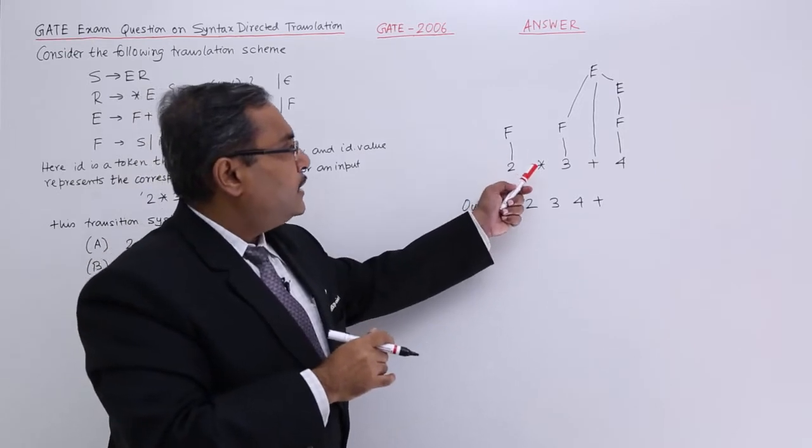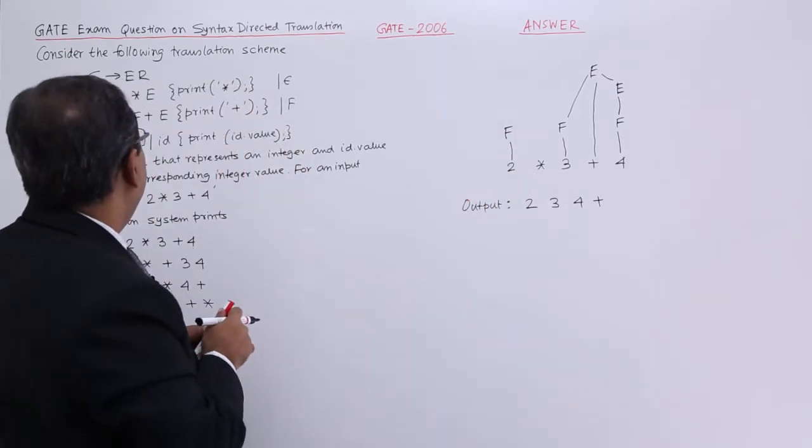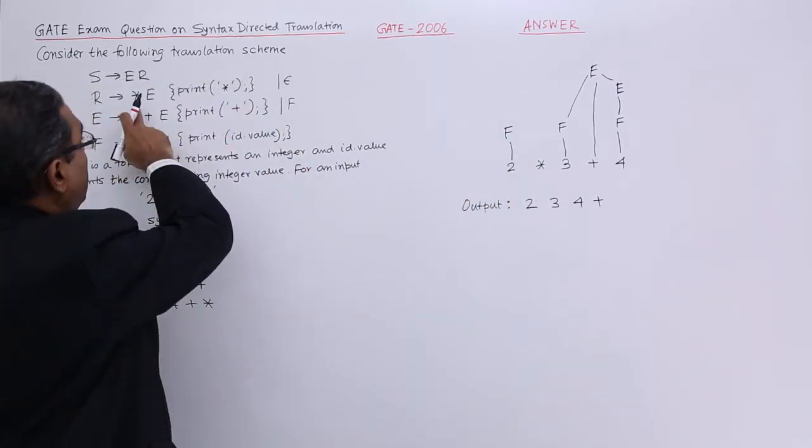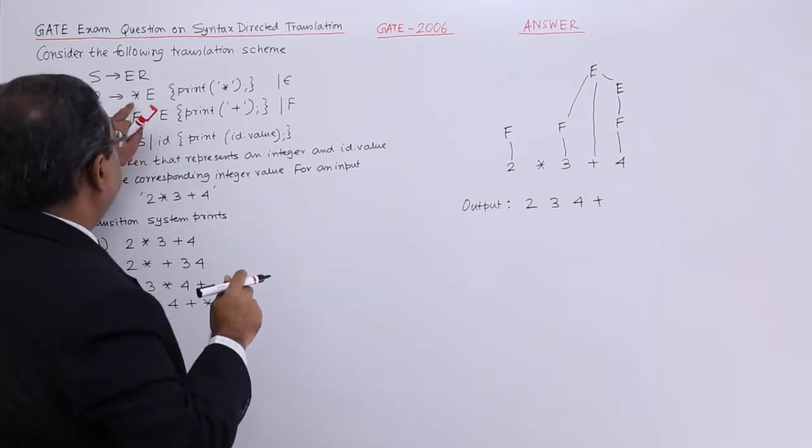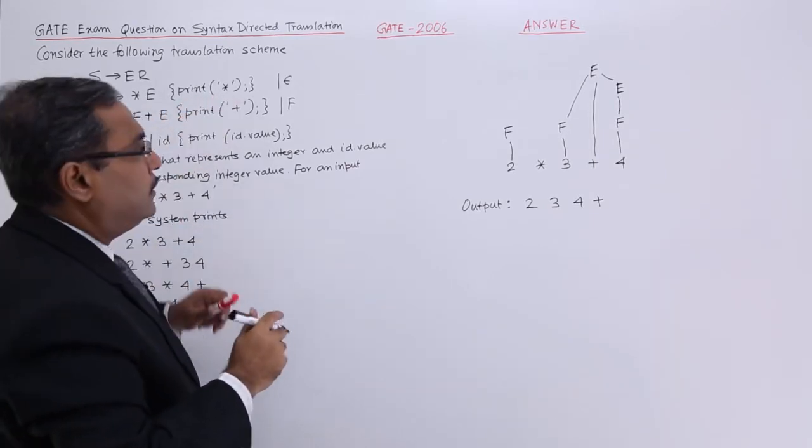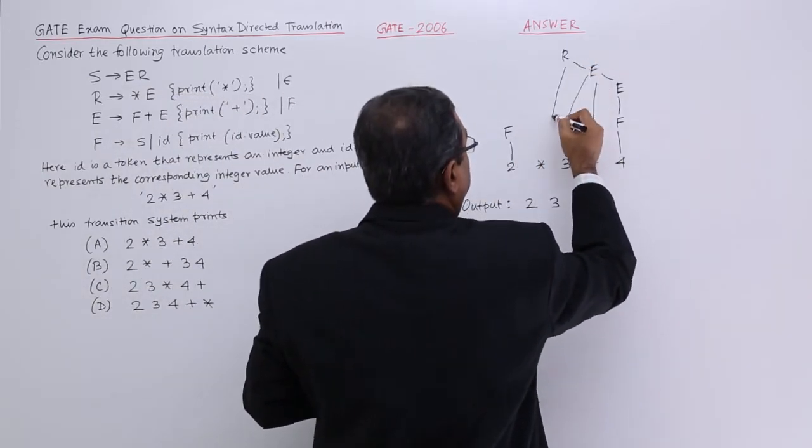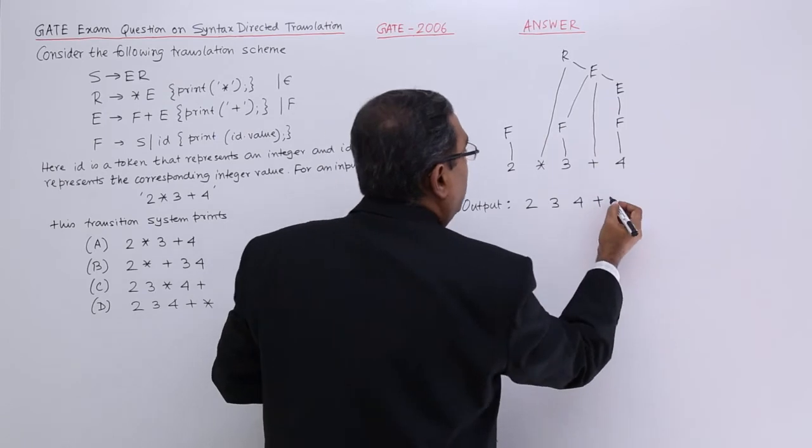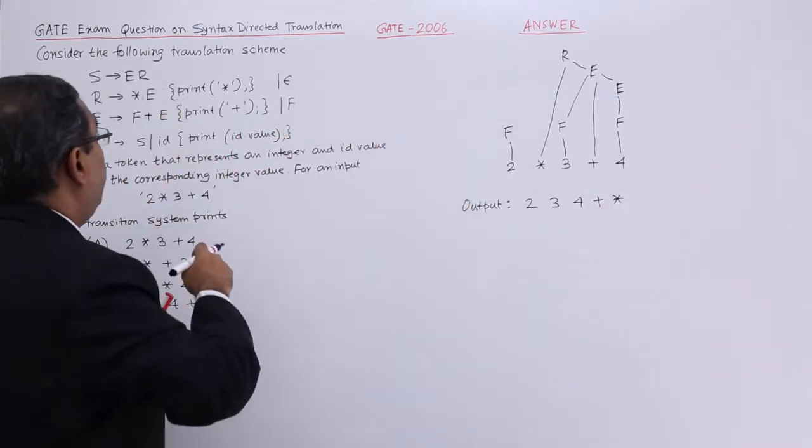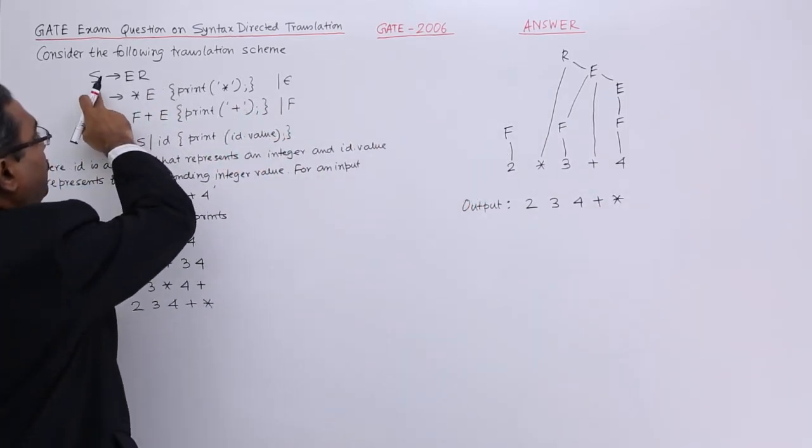Now, we are having F, we are having star, we are having E. We are having this star E will be R and it is having the semantic action print star. Star E will be R and the semantic action is star.